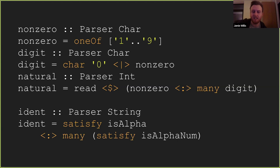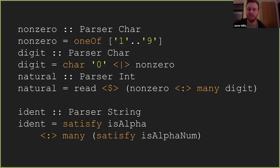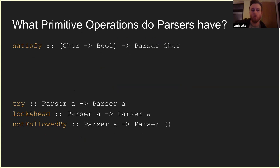An identifier is going to be something that starts with an alphabetical character but can continue with zero or more numeric characters. At its core, a parser combinator library needs satisfy, or an equivalent, which basically says: you give me a function that returns true or false given a character; if the function returns true I'll read the character, if false I'll fail. Then you also have try, lookahead, and not-followed-by. Try is used for backtracking; lookahead is positive lookahead; not-followed-by is negative lookahead.